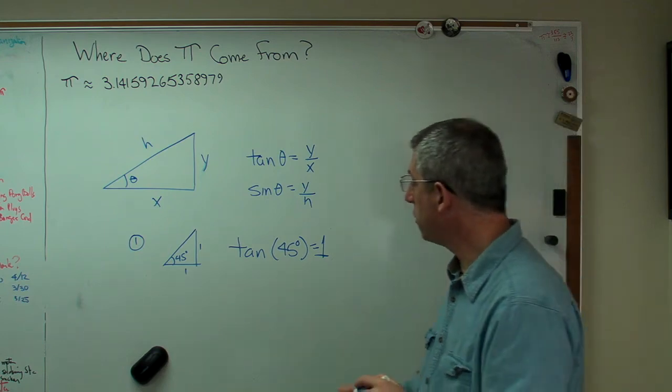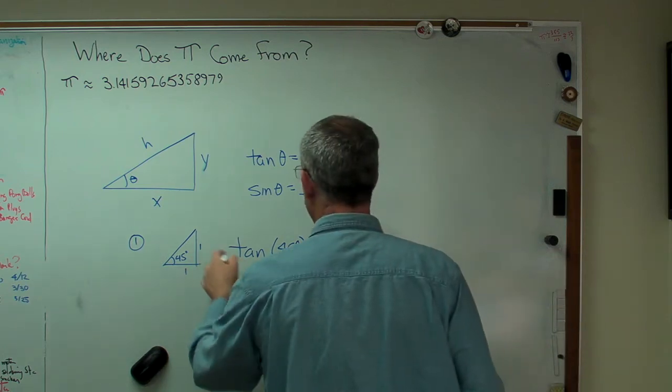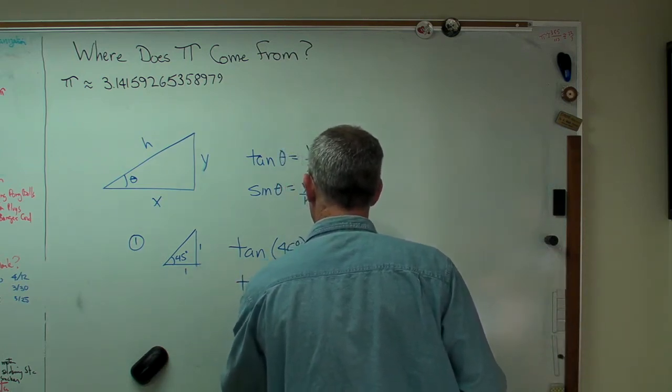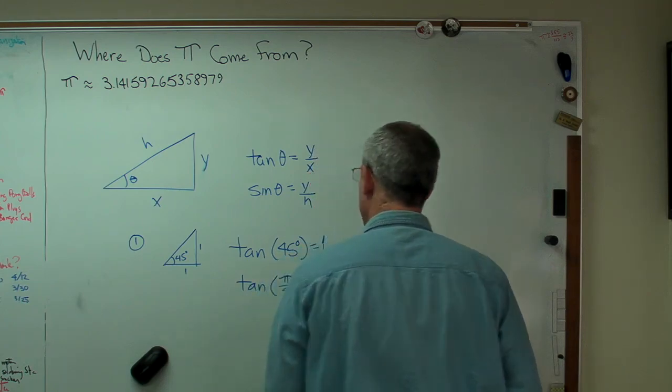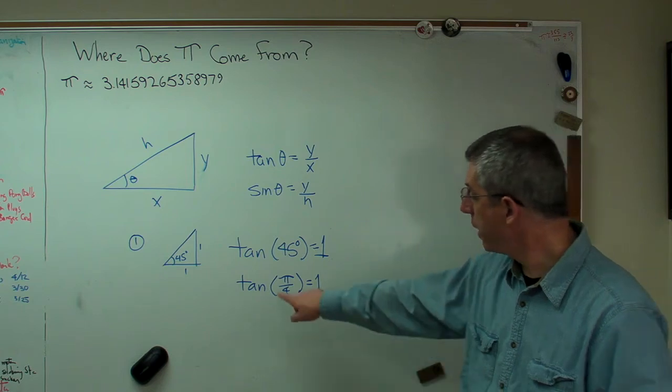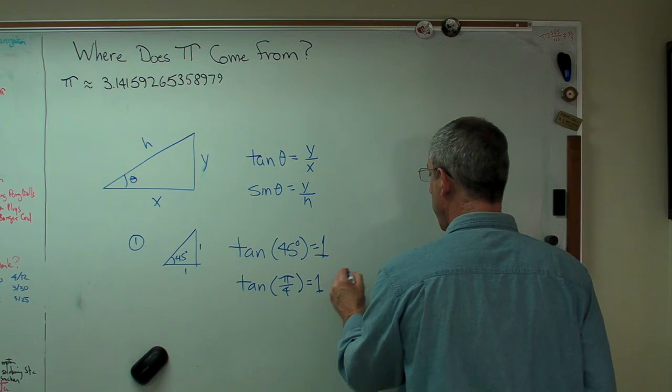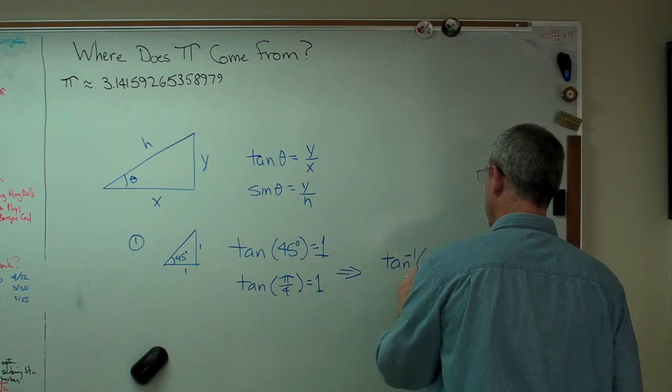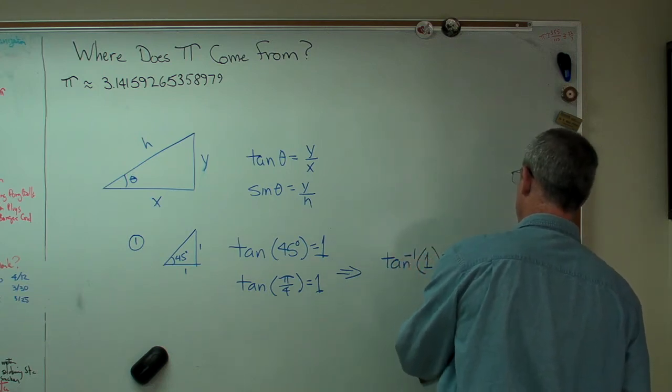We also know there's pi radians in half a circle. So that angle right there is also pi over 4 radians. We're almost there. We've got pi showing up in this expression, but I need pi to be by itself. So what I can do now is say that the inverse tangent of 1 is pi over 4.